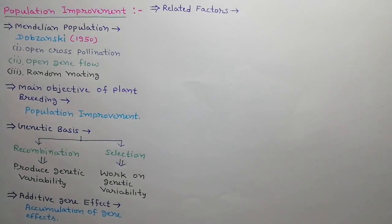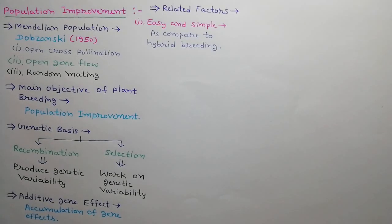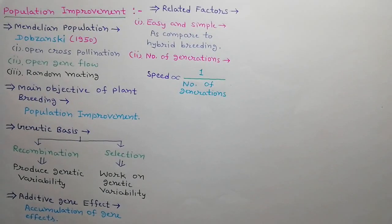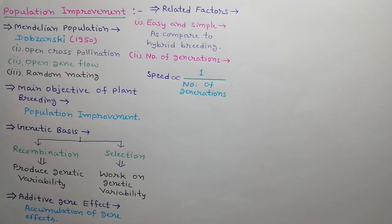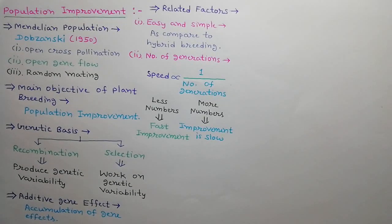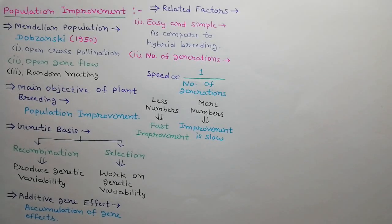Population improvement depends on many factors. The process of population improvement is more easy and simple as compared to hybrid breeding. Next factor is number of generations per selection cycle. The speed of improvement shows inverse relation with number of generations. Less number of generations take less time for improvement while more number of generations take more time for improvement.